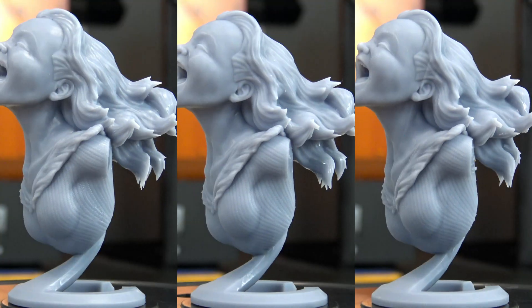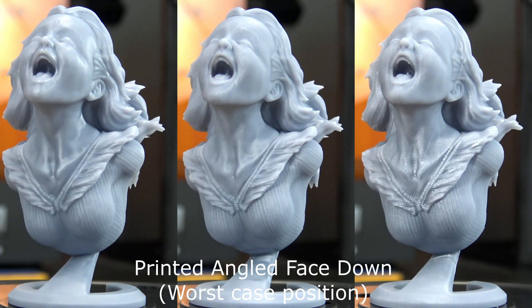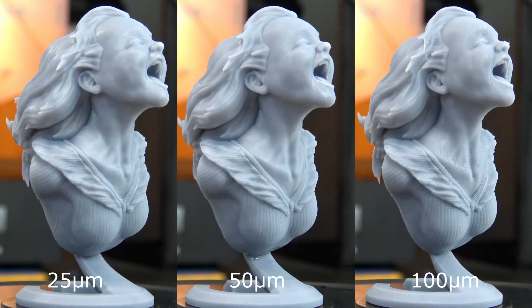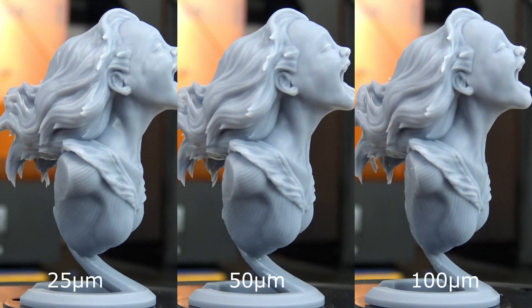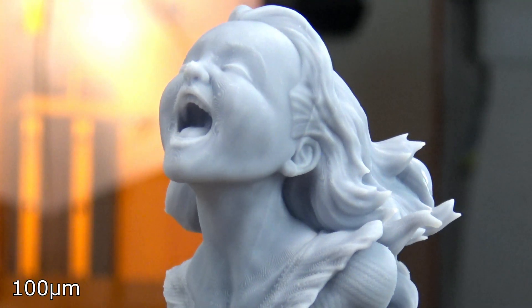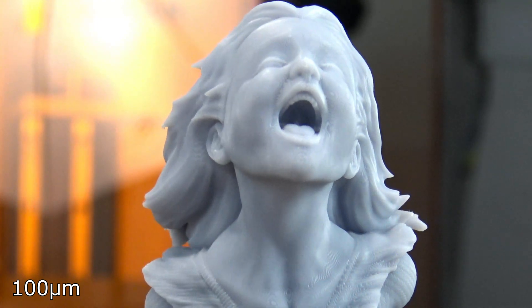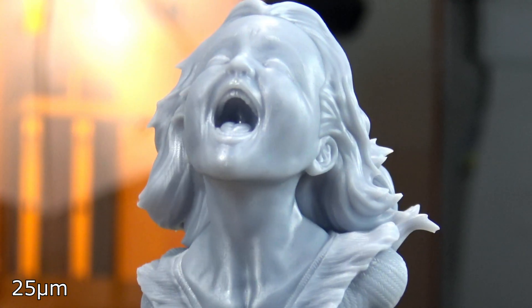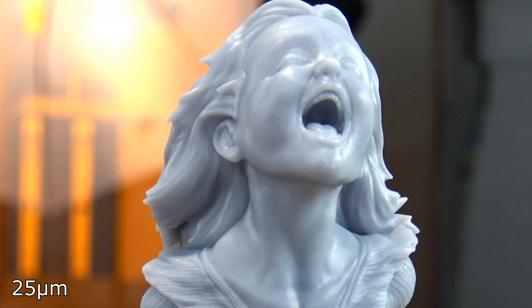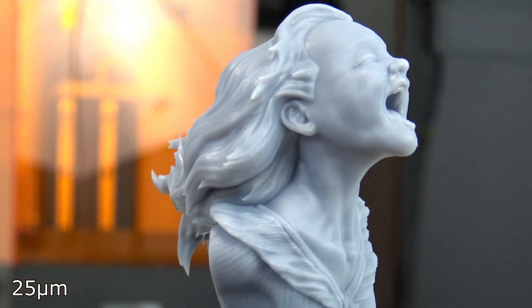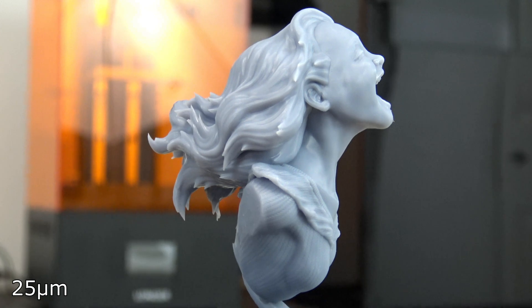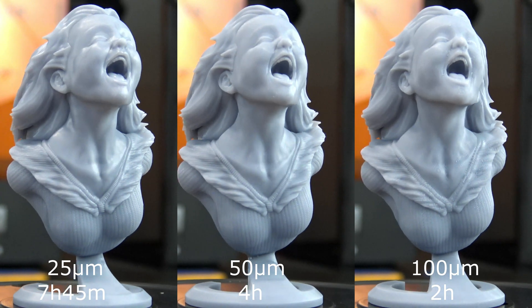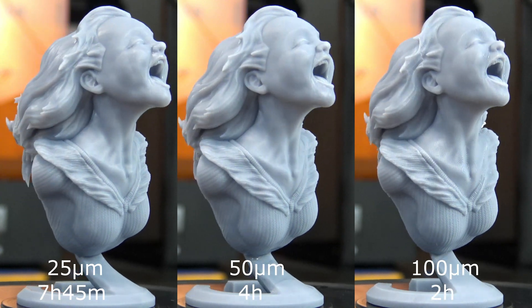I also had to test out the different layer heights. I printed the Joyful Yell model three times, with 25 microns, 50 microns, and 100 microns respectively. Even the 100 micron print is very detailed. But if you zoom into the face, you can see the individual layers with the right lighting. The 50 micron layers are much less apparent, and at 25 microns, they seemingly vanish. But the Orange 4K handled each setting perfectly, and the print time scaled as you would expect. The 100 micron version took exactly 2 hours to complete, the 50 micron doubled to 4 hours, and the 25 micron doubled again to 7 hours and 45 minutes.